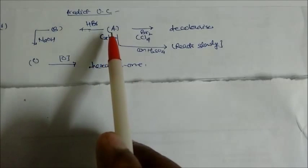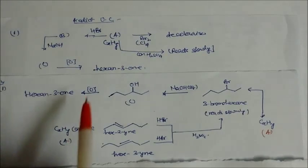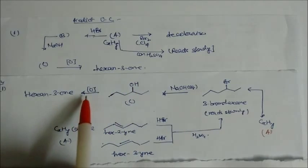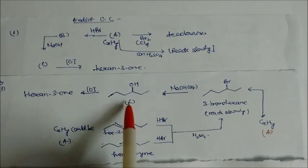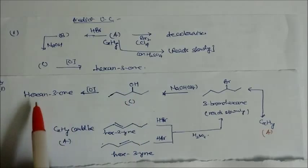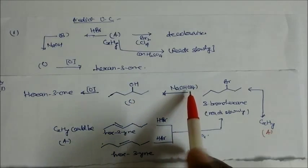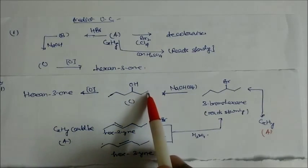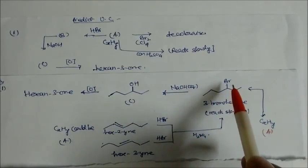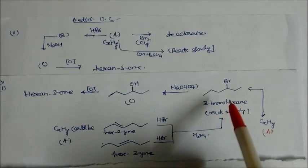Again, hydrocarbon A in presence of concentrated H₂SO₄ will react slowly. We will take hexan-3-one and do retro synthesis. Hexan-3-one can be obtained from the corresponding alcohol — oxidation of that alcohol gives hexan-3-one. The OH is present at the third carbon, and we can get that OH by using sodium hydroxide, meaning a substitution reaction has taken place at the secondary carbon, at the third carbon.